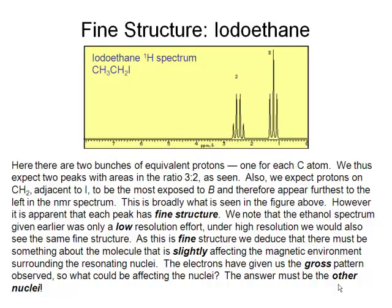This fine structure is clearly giving us more information. The question is, where is that information coming from? Well, we know that these changes in the chemical shift arise through changes in the magnetic field experienced by the nucleus. We've already taken into account the effect of the applied magnetic field and the magnetic field due to the electrons. So where is our new magnetic field coming from?